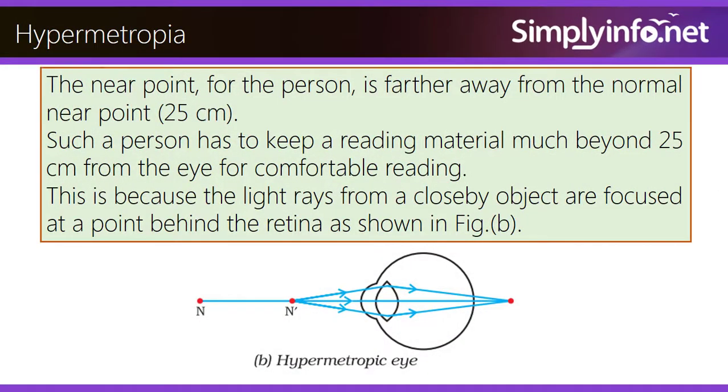The near point for the person is farther away from the normal near point 25 cm. Such a person has to keep a reading material much beyond 25 cm from the eye for comfortable reading. This is because the light rays from a close-by object are focused at a point behind the retina as shown in figure B.